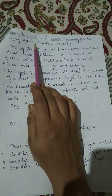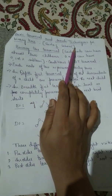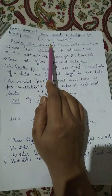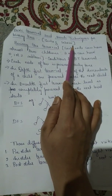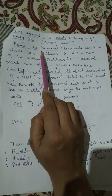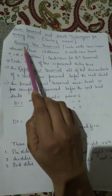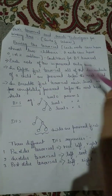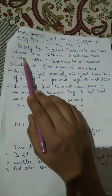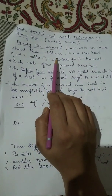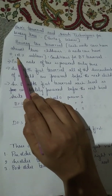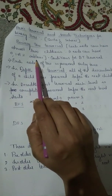Next topic: basic traversal and search technique for binary trees. We can study this from the Sarta Sahani book. A binary tree is one in which each node can have at most two children — that means a node can have 0, 1, or 2 subtrees.